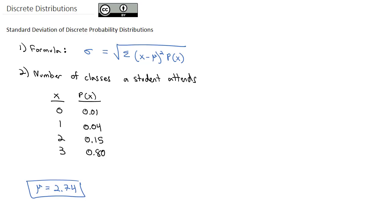Starting on the inside, in the parentheses, you see that x minus μ, which means we're going to take the x values, make sure you're going to the x column, and we're going to subtract the average of 2.74.